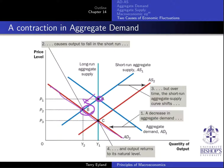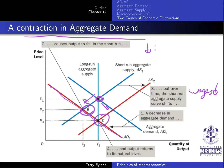From point B, we're in a recessionary output gap. Under laissez-faire — letting the economy recover on its own — the short-run aggregate supply curve will shift right over time because wages will start falling. This moves output back to its natural level. This contraction of aggregate demand could also reflect a contraction of consumption, exports, or government spending. All of these are analyzed exactly the same way.